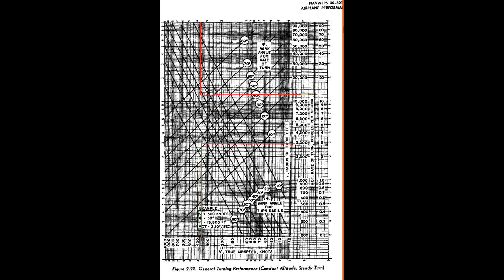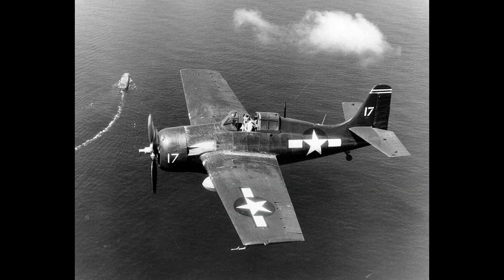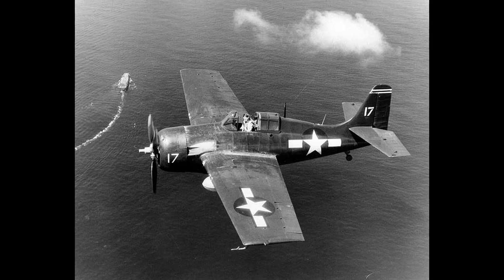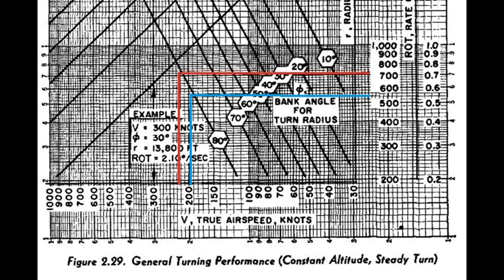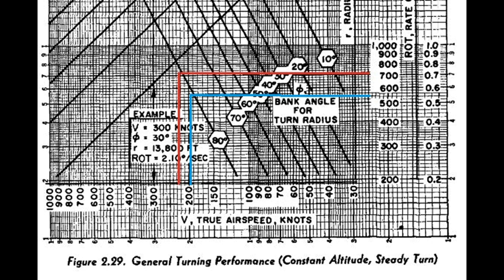Now let's switch gears and graph the F4F Wildcat, specifically the hotter FM2 version, for an interesting comparison. The FM2 can pull 7.5G's, so a 7G turn is not a problem at sea level. It has a lower stall speed of 74.5 knots — that's power off, but it's a comparative number to the P-51. That means it needs to maintain 197 knots to pull a 7G turn. Checking the FM2 manual, it can do 245 knots at sea level — plenty of speed. Graphing the Wildcat in blue, you can clearly see it easily outturns the P-51. These are not sustainable turn rates, but for at least a short time the Wildcat can outturn it.